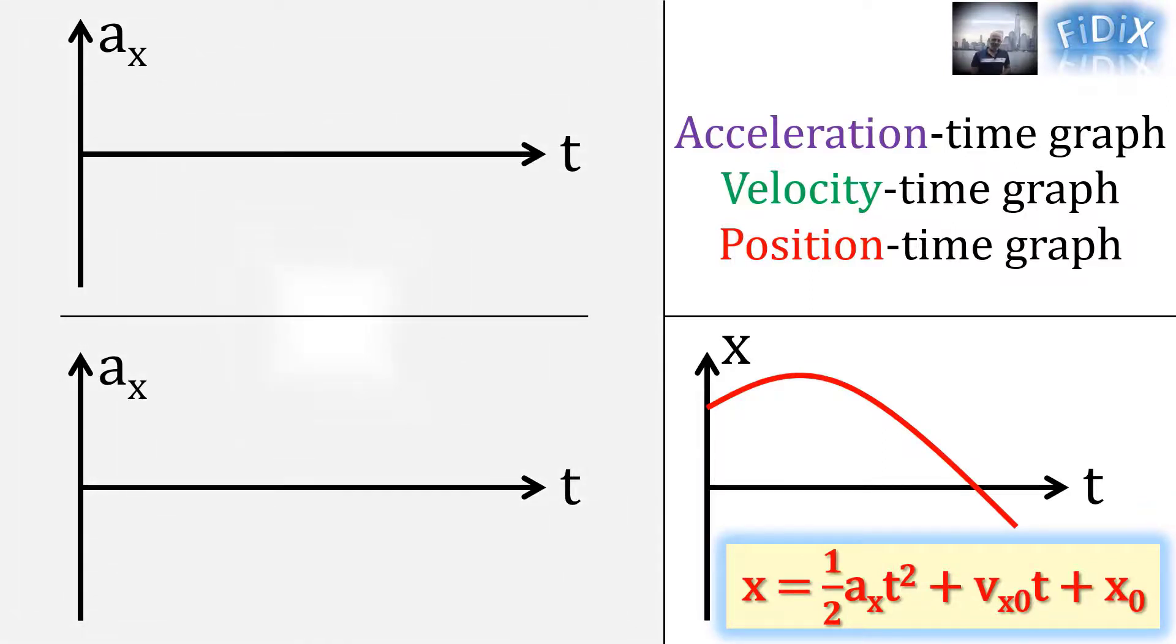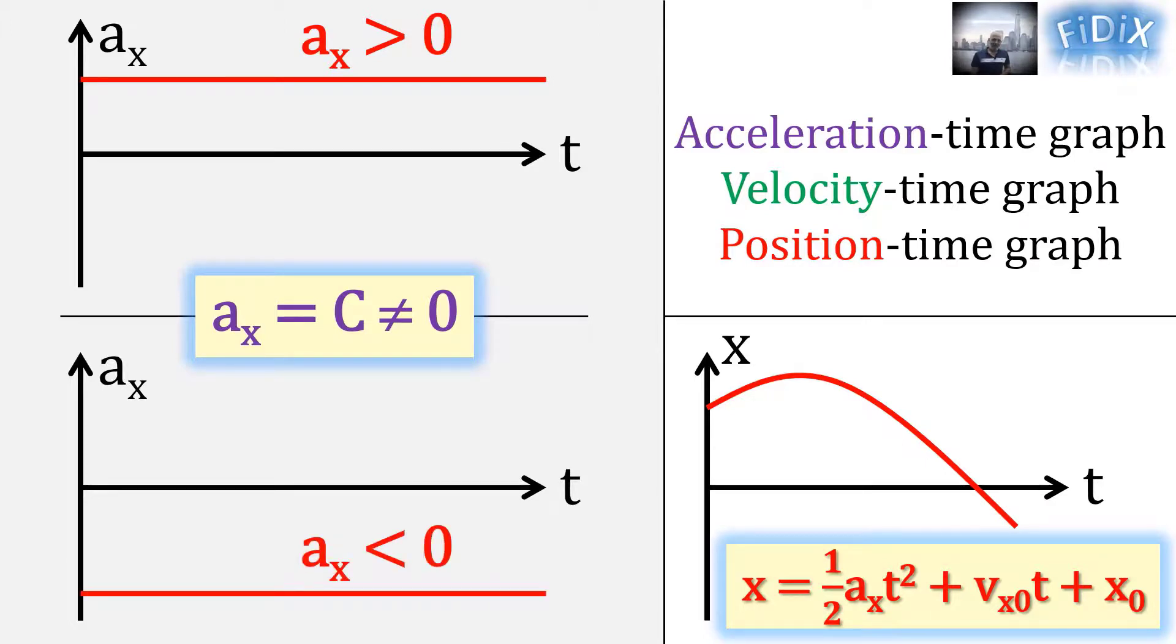For the acceleration-time graph, the function ax equals constant is a straight line above and parallel to the t-axis when ax is positive and below and parallel to the t-axis when ax is negative.